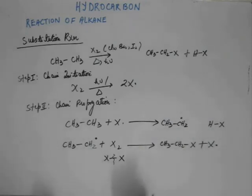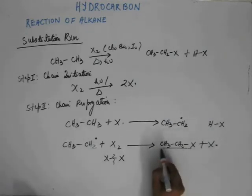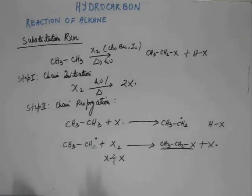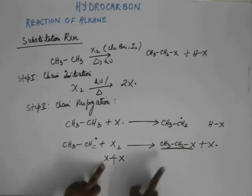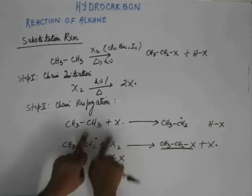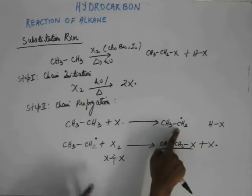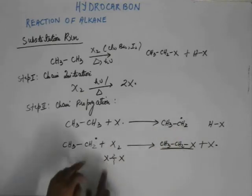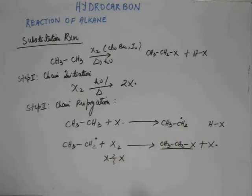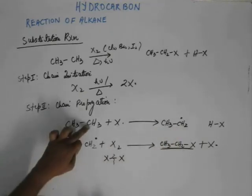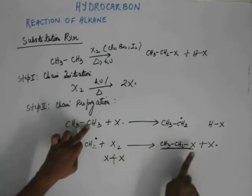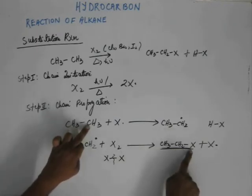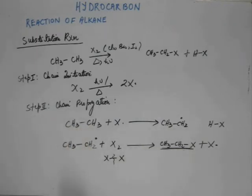The result is a haloethane — the desired product. The C• and one X• have combined, while the other X• is released. Effectively, hydrogen has been removed from the carbon and halogen has been added in its place, making this a substitution reaction.